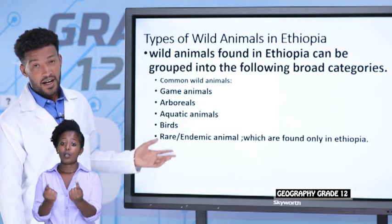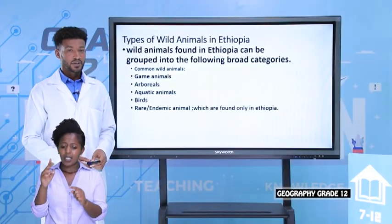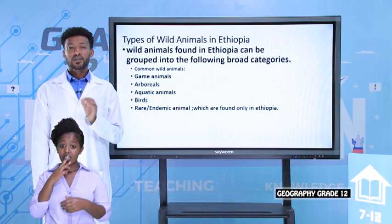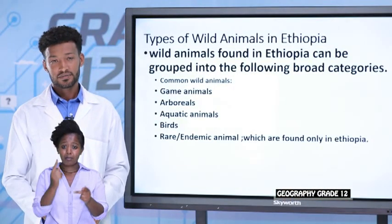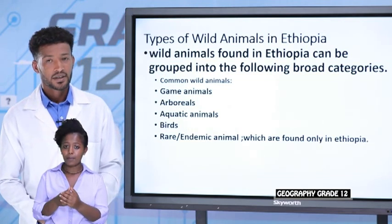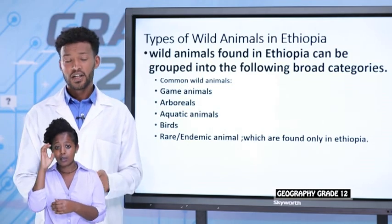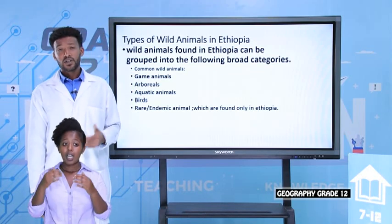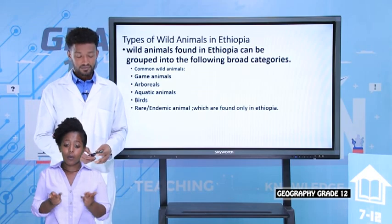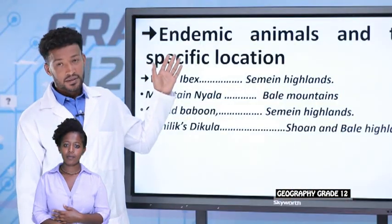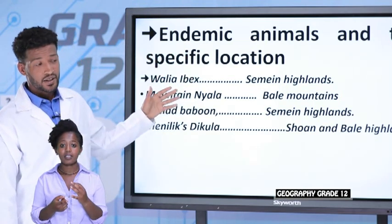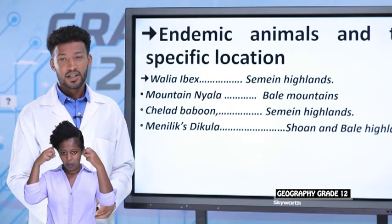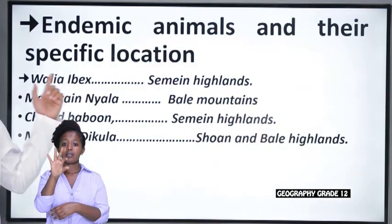The last category is rare or endemic animals of Ethiopia. Endemic animals are animals confined to only specific areas of the country. Let's see the seven endemic animals of Ethiopia and where they are located. The first one is the Walia Ibex, which is found in the Semen Highlands.